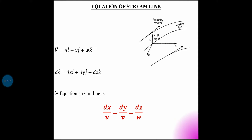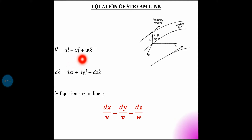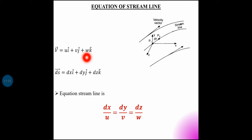This is a flow field with a streamline. This is a point P1 on the streamline. At P1, the velocity vector is tangent to the streamline. The velocity vector V is denoted as V = ui + vj + wk, where u is the x-component, v is the y-component, and w is the z-component. Here i, j, k are unit vectors along the x, y, and z directions.